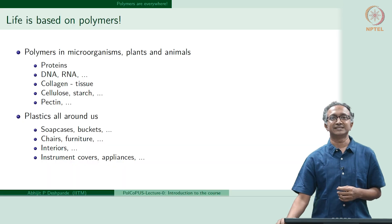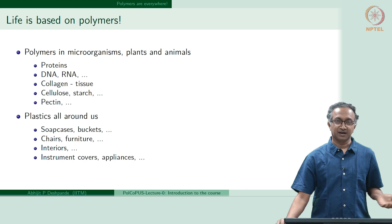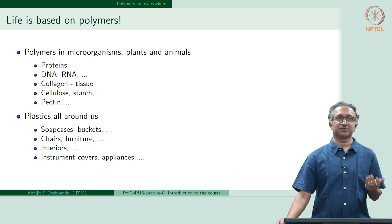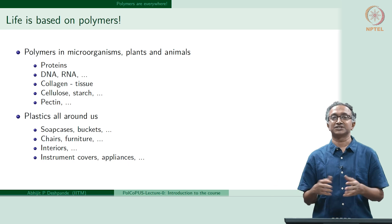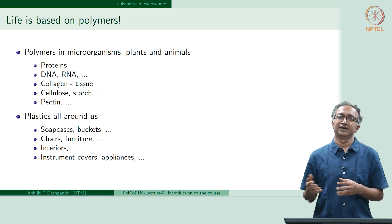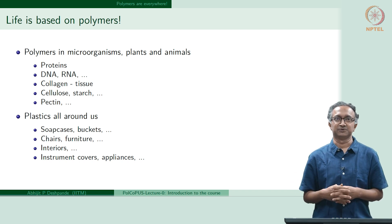Just to begin with, we can start with the thought about where are polymers. Basically, polymers are everywhere. Life is based on polymers. If you really see, polymers are there in our bodies as part of DNA, RNA, in cellulose and starch. When we look at the plant world around us, from microorganisms all the way to us, everywhere there are macromolecules.